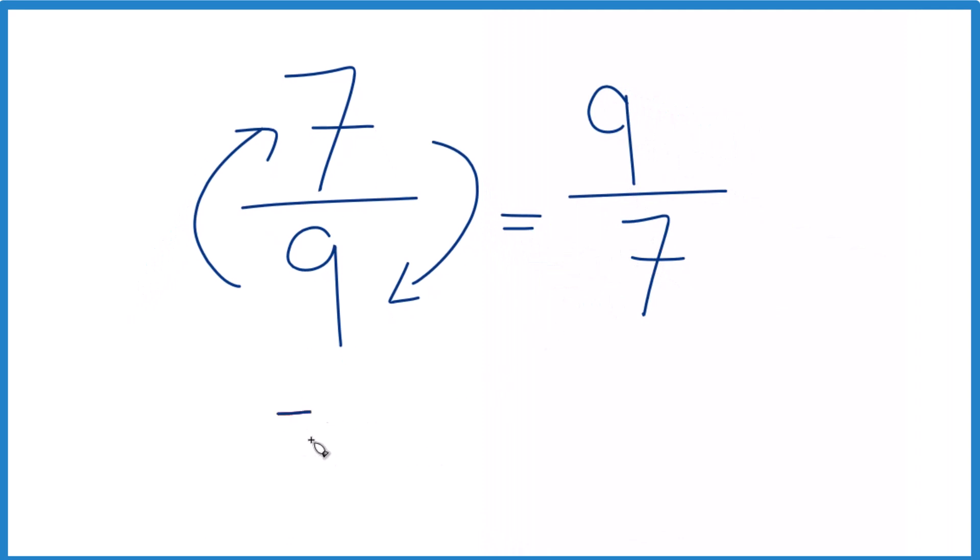We could take seven-ninths, and we can multiply that times the reciprocal, nine-sevenths. And if we did the top part correctly, we should get one.